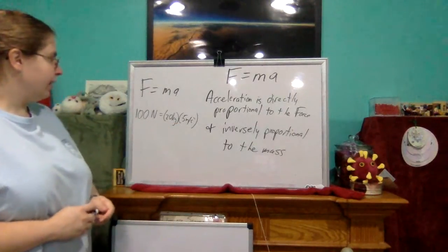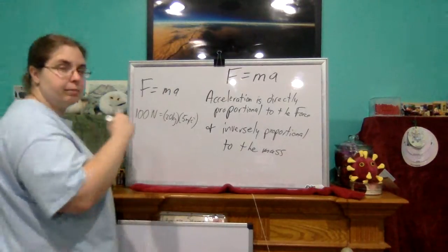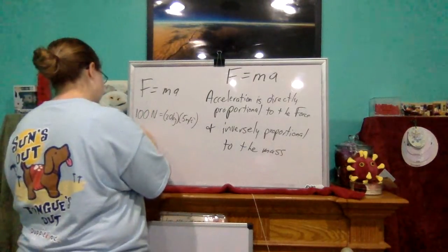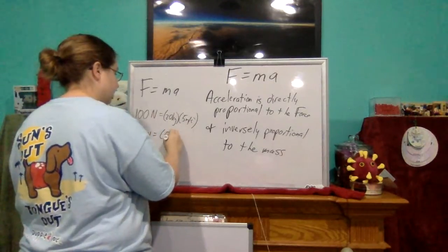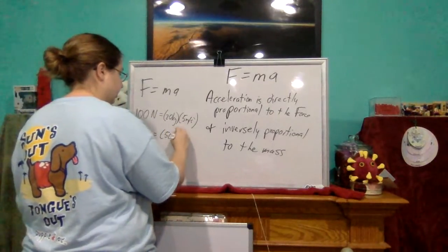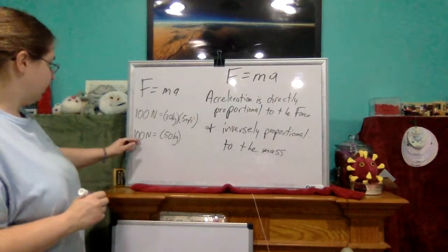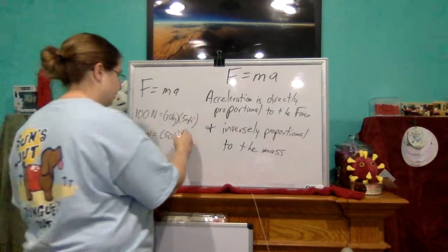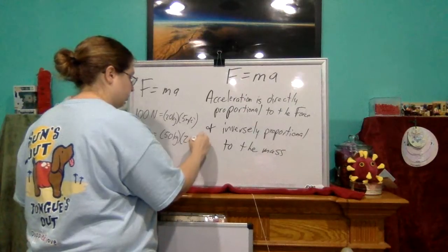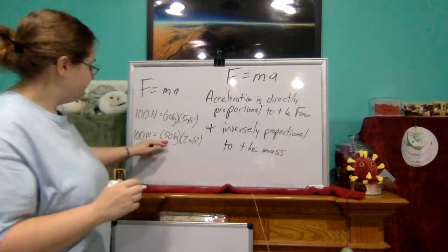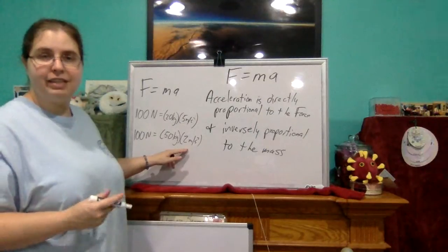So 5 times 20 gives us 100. Well, what happens if I increase the mass? Remember, we want to keep force the same. If I increase the mass to 50 kilograms, what's my new acceleration going to be? 100 divided by 50 means 2 meters per second squared. So by increasing the mass, the acceleration decreased.